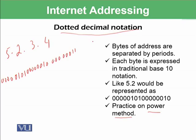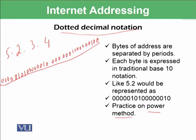And 4 can be represented as 00000100. So this number represents 5.2.3.4 on the backend in the computer system.